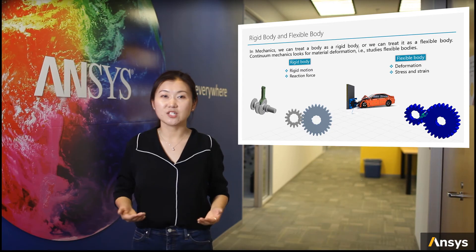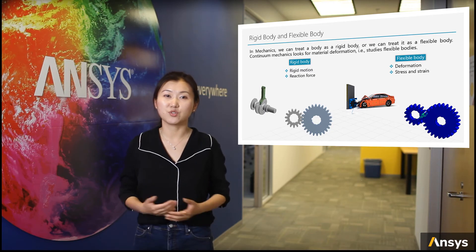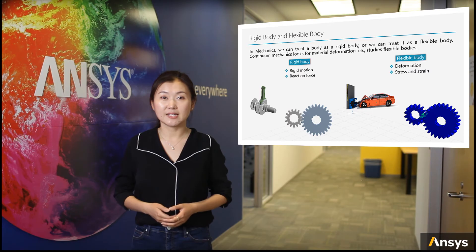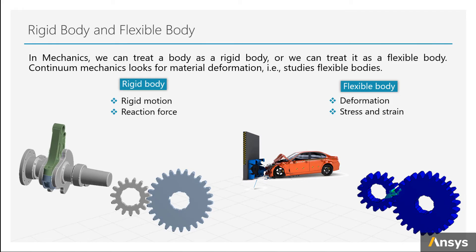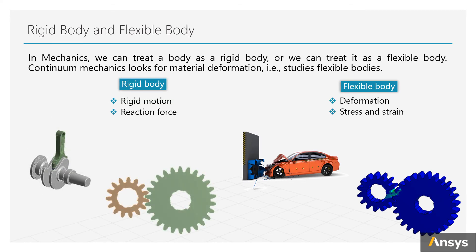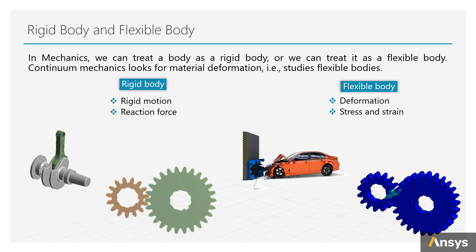In mechanics, we can treat a solid body as a rigid body or as a flexible body. For rigid bodies, they do not deform under the action of applied force. The study of rigid bodies looks for the movement of the system and reaction forces from the movement. For example, the parts of an engine connection rod are treated as rigid bodies, or gears are treated as rigid bodies to find the needed turning force for a rigid mechanism.